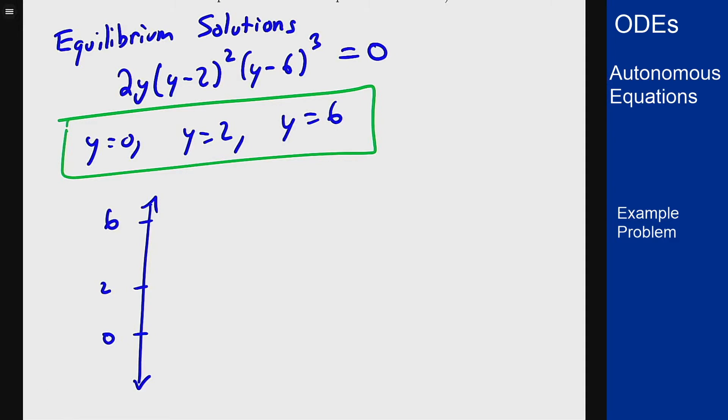If I plug in negative 1, I will get a negative 2 here. I will get a negative 3 squared here, which is a positive 9. And then I'll see a negative 7 here cubed, which is still negative. So negative, positive, negative—that's a positive. So negative 1 has a positive, so that's positive down there.